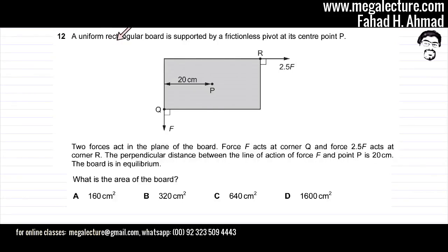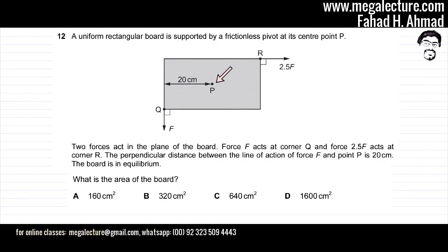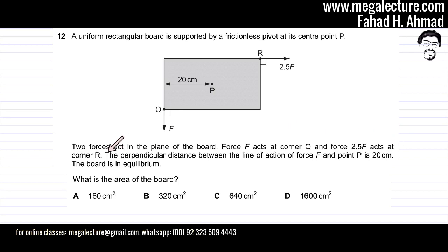The question reads that a uniform rectangular board is supported by a frictionless pivot at its center point. There is a uniform board and it's supported by a frictionless pivot right at the center of the board. Two forces act in the plane of the board: force F acts at corner Q and force 2.5F acts at corner R.